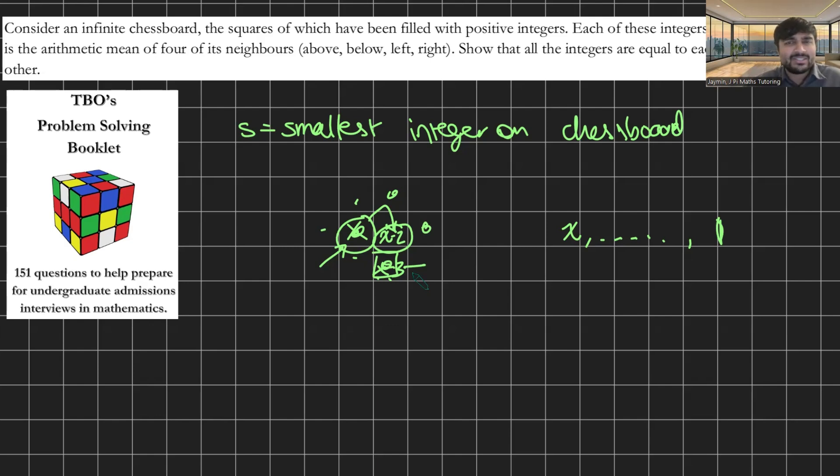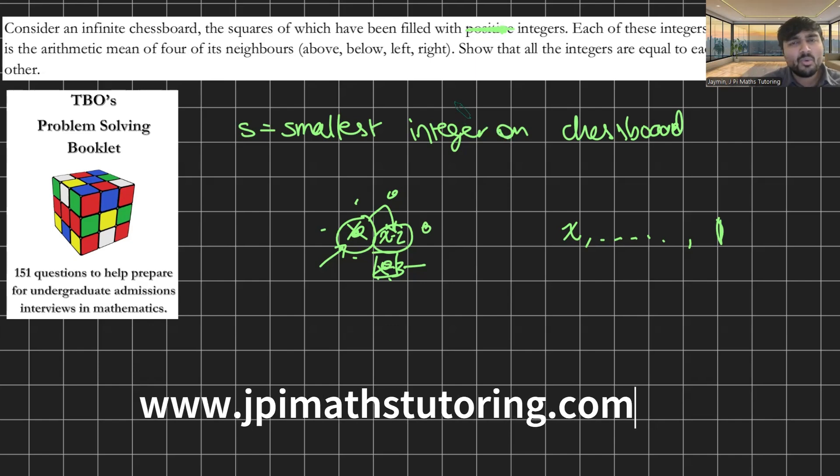I'm interested to know if there are any other solutions. I'm sure there are other interesting problems. I encourage you to ask yourself what happens if you replace positive integers with just integers? What happens to the problem then? Have a go.